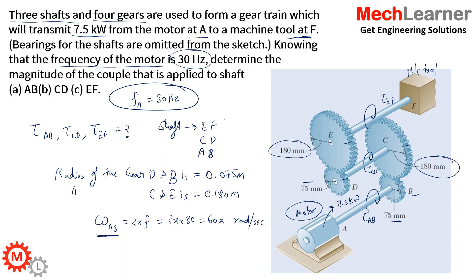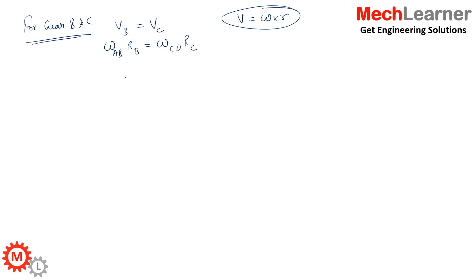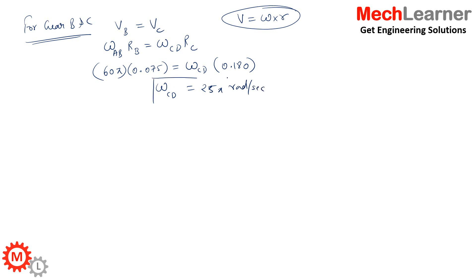Gear B is attached to gear C, meaning the linear velocity of gear B equals the linear velocity of gear C, expressed as ω × r. Gear B is attached to shaft AB and gear C is attached to shaft CD, so: ω_AB × r_B = ω_CD × r_C. Substituting: 60π × 0.075 = ω_CD × 0.180. Solving this equation gives ω_CD = 25π radians per second.